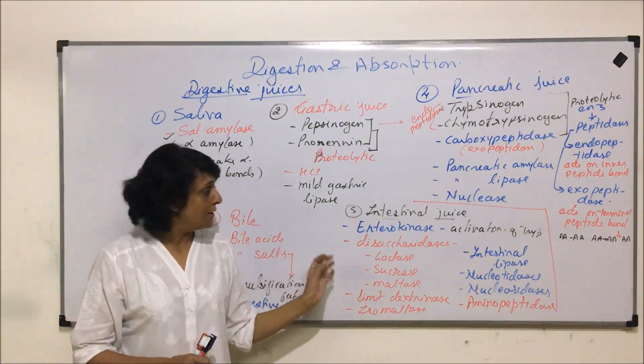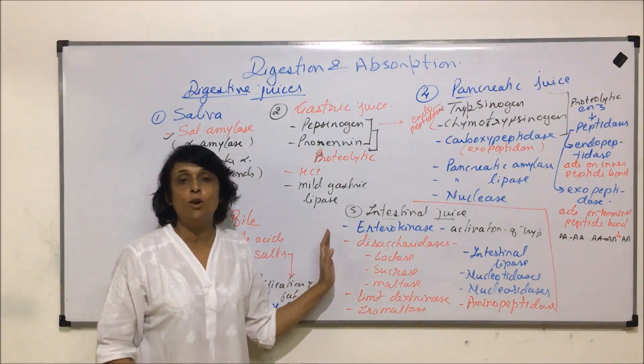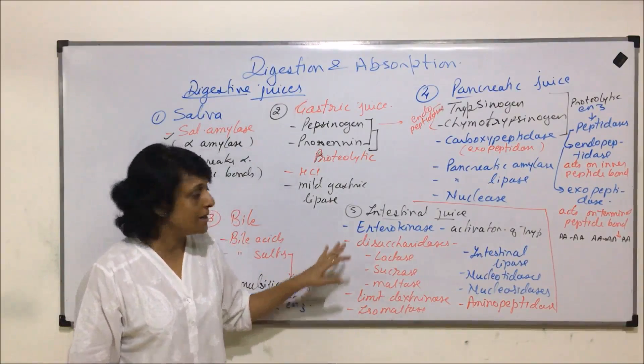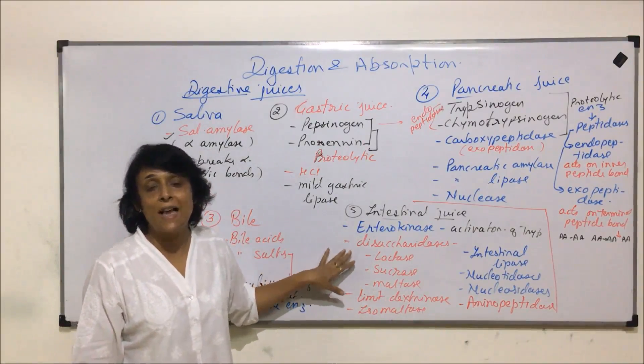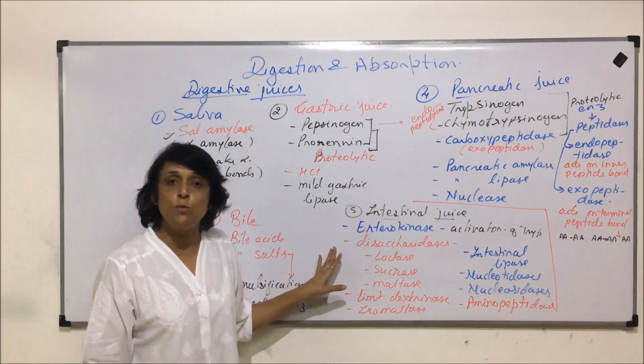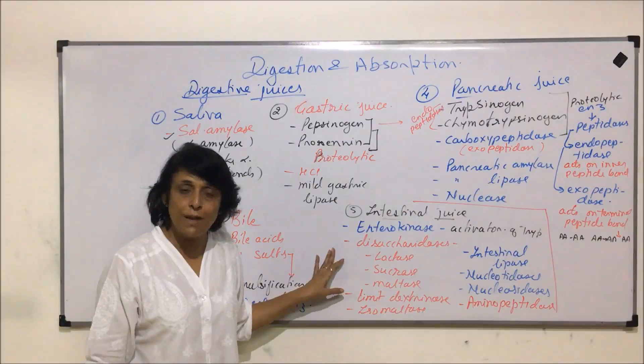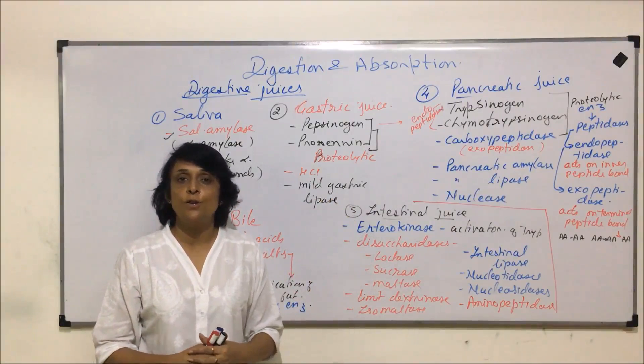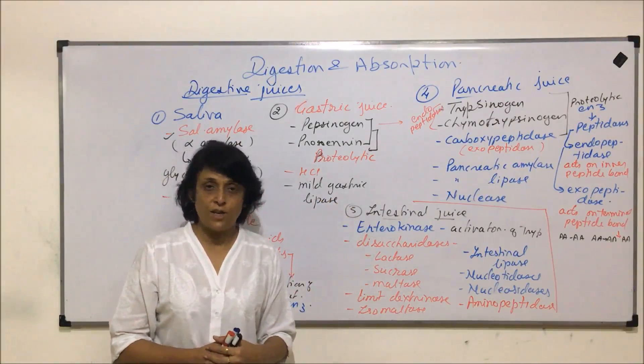These are all five types of digestive juices and their enzymes that help in the process of digestion. Now, after understanding the composition of all the juices and the types and names of the enzymes, we will start with the actual process of digestion.